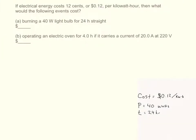If electrical energy costs 12 cents or $0.12 per kilowatt-hour, then what would the following events cost? First, burning a 40 watt light bulb for 24 hours straight. Second, operating an electrical oven for four hours if it carries a current of 20 amps at 220 volts.